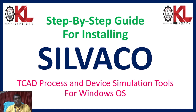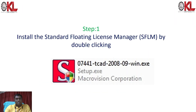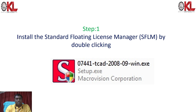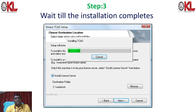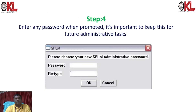The first step is to install the Standard Floating License Manager, known as SFLM, which is shown on the screen. Double-click on this particular file to complete the first step. It will ask you to select the installation license server destination location. Click next and wait until the installation is completed — the license server will begin installing.